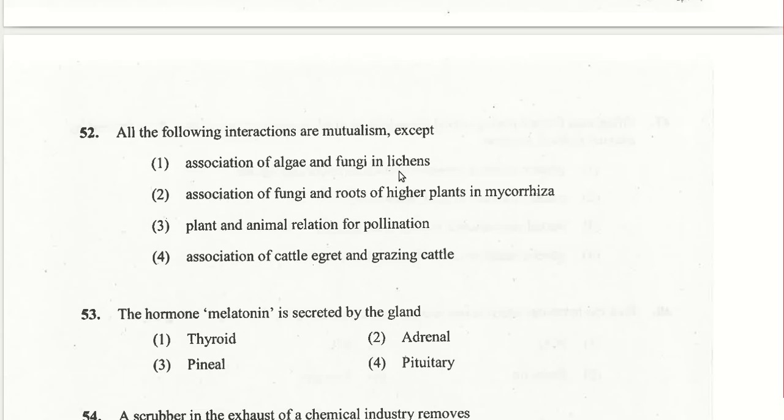All of the following interactions are mutualism except the association of cattle egret and grazing cattle, because the cattle egret is benefited but the grazing cattle is not benefited at all. All other three associations listed are symbiotic or mutualistic.